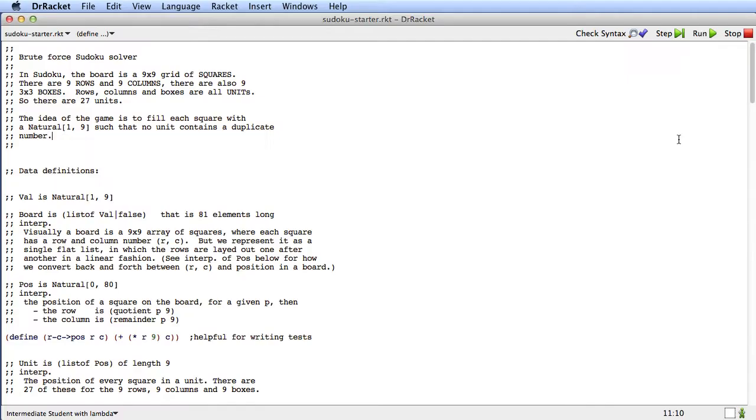Let's go look at our data definitions. So here I've got the Sudoku starter.racket file, which you can get from the website. And I'm running this in the intermediate student with lambda language, because later on there will be some functions where it's convenient to use lambda.